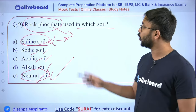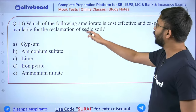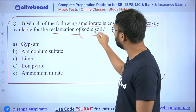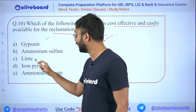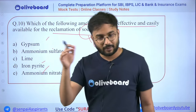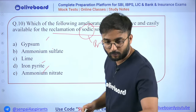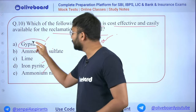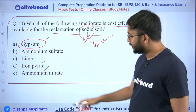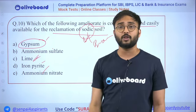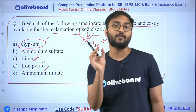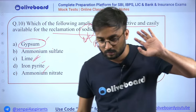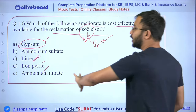Next: which ameliorant is cost-effective and easily available for reclamation of sodic soil? Options: gypsum, ammonium sulfate, lime, iron pyrite, ammonium nitrate. Sodic soil means basic soil. The answer is gypsum. Lime is used for generally basic soils — there's a thin difference between basic soil and sodic soil. Basic soil has very high pH levels. Gypsum is correct, not lime.